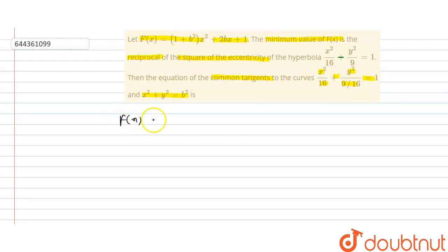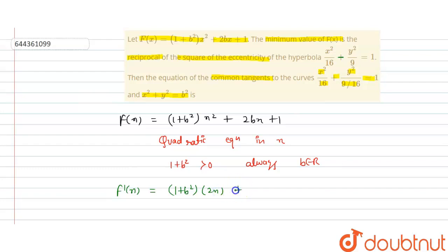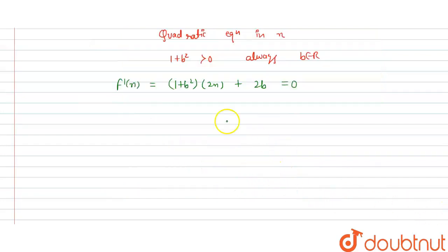The value of f(x) is given as 1 + b² multiplied by x² + 2bx + 1. This is a quadratic equation in x, where 1 + b² > 0 always, and b belongs to real numbers. Now we find f'(x) to get the minimum value. f'(x) = (1 + b²)·2x + 2b = 0, giving x = -b/(1 + b²).